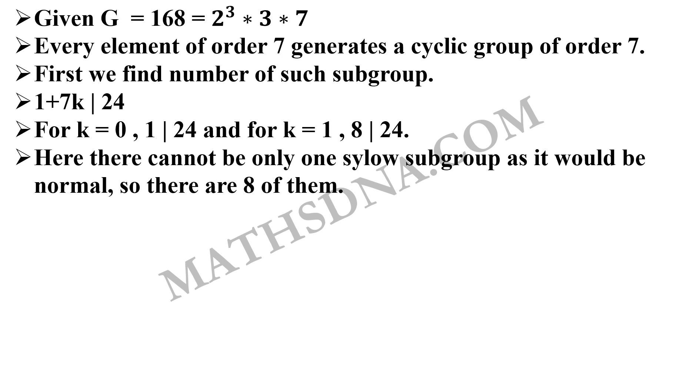But here k cannot be equal to 0. That is 1 cannot divide 24. Because if that is the case, then there will be only one Sylow subgroup, which is not possible because it will be that normal and then G will not be simple. So there are 8 subgroups.